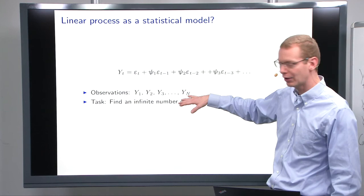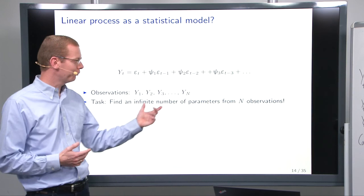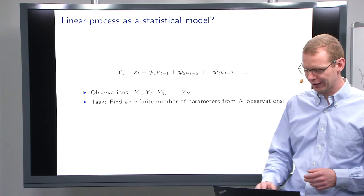In practice, what we'll have is a finite number of observations from yn down back to y1. And the task is then, how do we find an infinite number of parameters given n observations? Well, that's not so fun. There's a lot of things that cannot be done. This is one of the things.